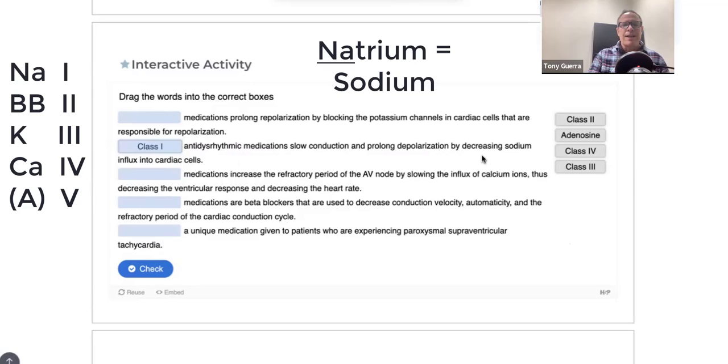Class 2 are the beta blockers, the 2Bs. So N-A-B-B. Medications are beta blockers that are used to decrease conduction velocity, automaticity, and the refractory period of the cardiac conduction cycle.